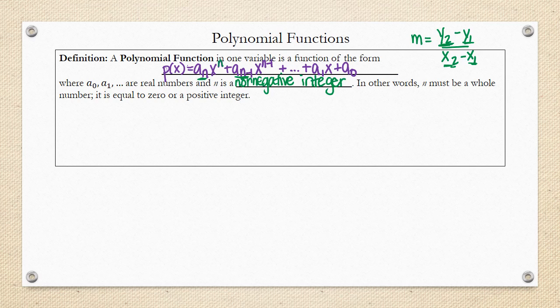So, in other words, n must be a whole number. Whole numbers are numbers like 0, 1, 2, 3, and so on. It's equal to 0 or a positive integer.